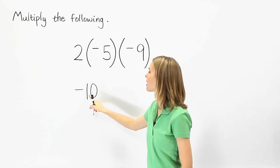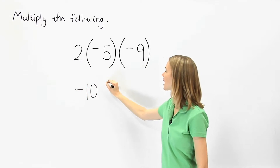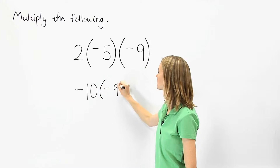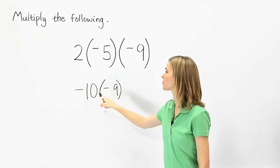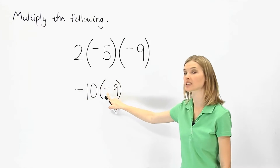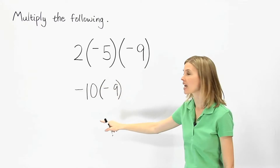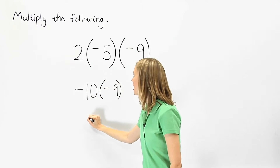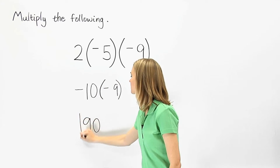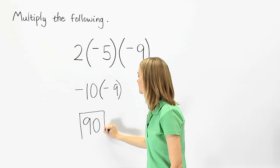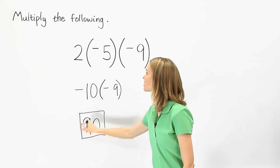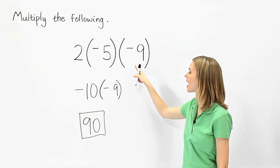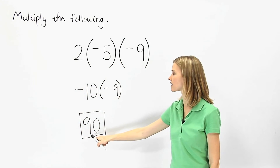And we have negative 10 times negative 9. Since a negative times a negative is a positive, negative 10 times negative 9 is positive 90. So 2 times negative 5 times negative 9 is positive 90.